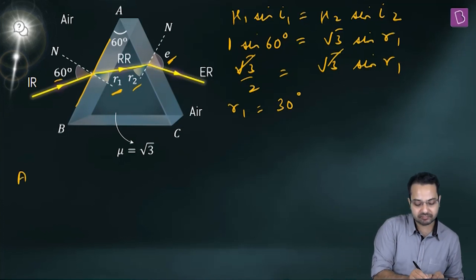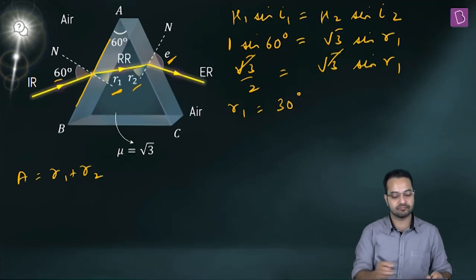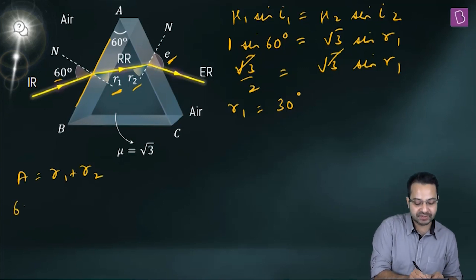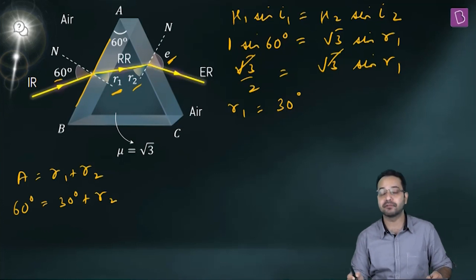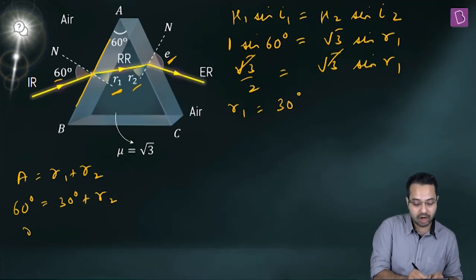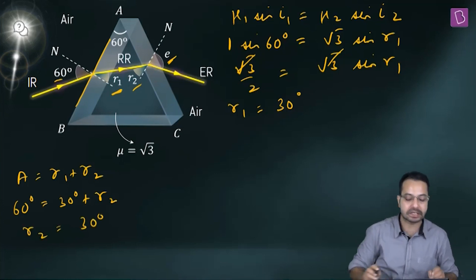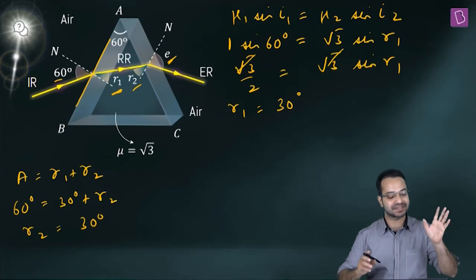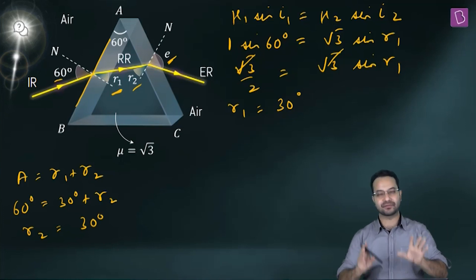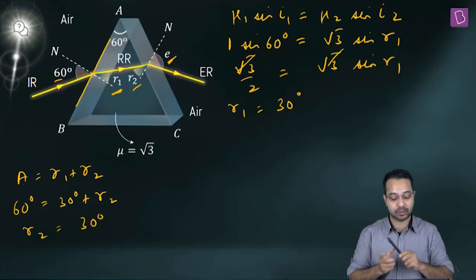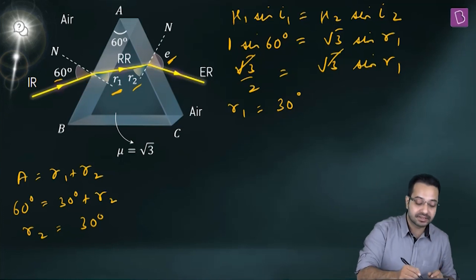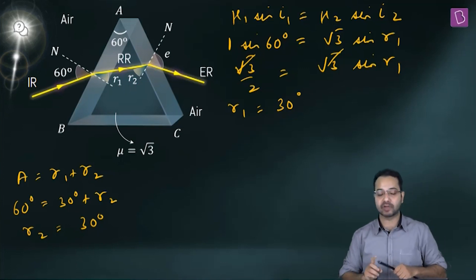Next, A = R1 + R2. A = 60°, R1 = 30°, so R2 = 30°. Now something very interesting is happening here: this angle has become 30° and this angle has also become 30°.